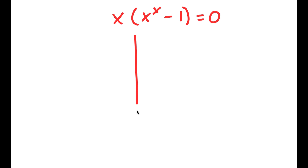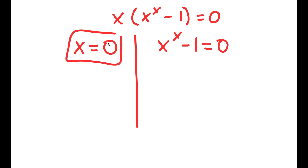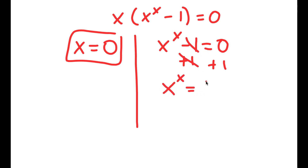This gives me two equations. I have x is equal to 0, and I have x to the power of x minus 1 is equal to 0. So x equals 0 is already a solution. For x to the power of x minus 1 equals 0, I'm going to add 1 on both sides, so these two cancel out and I get x to the power of x is equal to 1.